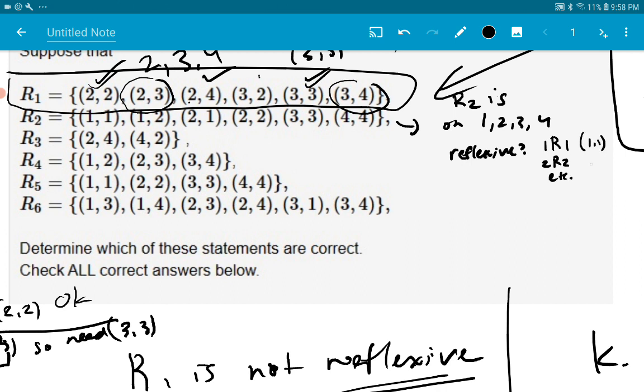In other words, 1,1 is a pair, 2,2 is a pair, 3,3 is a pair, and 4,4 is a pair. That would be all of them, right? Are all four of these in R2? Just look at it and I think they are. There's 1,1, there's 2,2, there's 3,3, there's 4,4. Yeah, so, so R, R2 is reflexive.